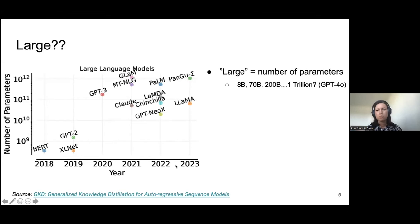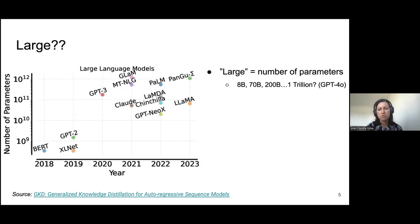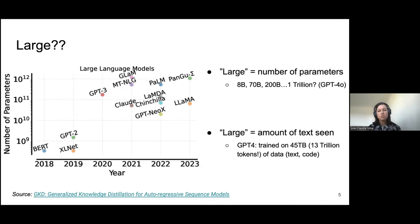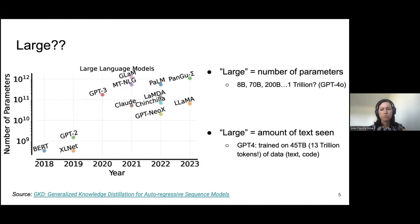Today the largest models would be in the range of perhaps one trillion parameters. The information is not exactly known because the GPT family is a so-called closed source — the OpenAI team is not disclosing exact numbers. A large language model is also large in the sense that it has seen very large amounts of text, including internet pages but also code. This is why they can be used as code generators or co-pilots to help write code.